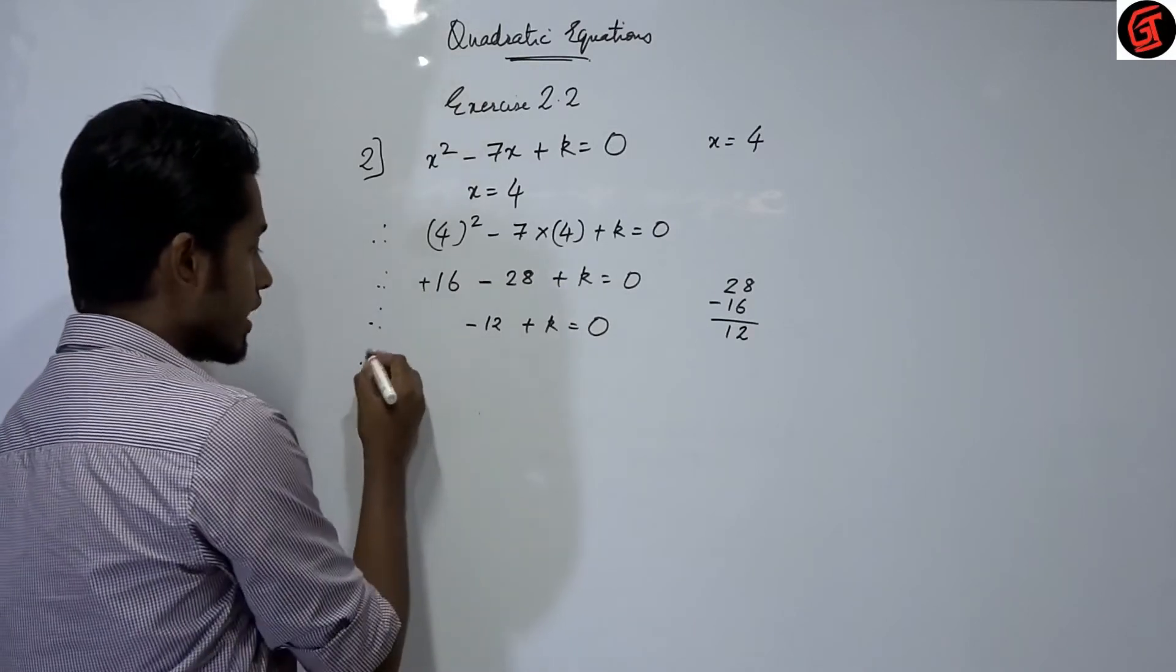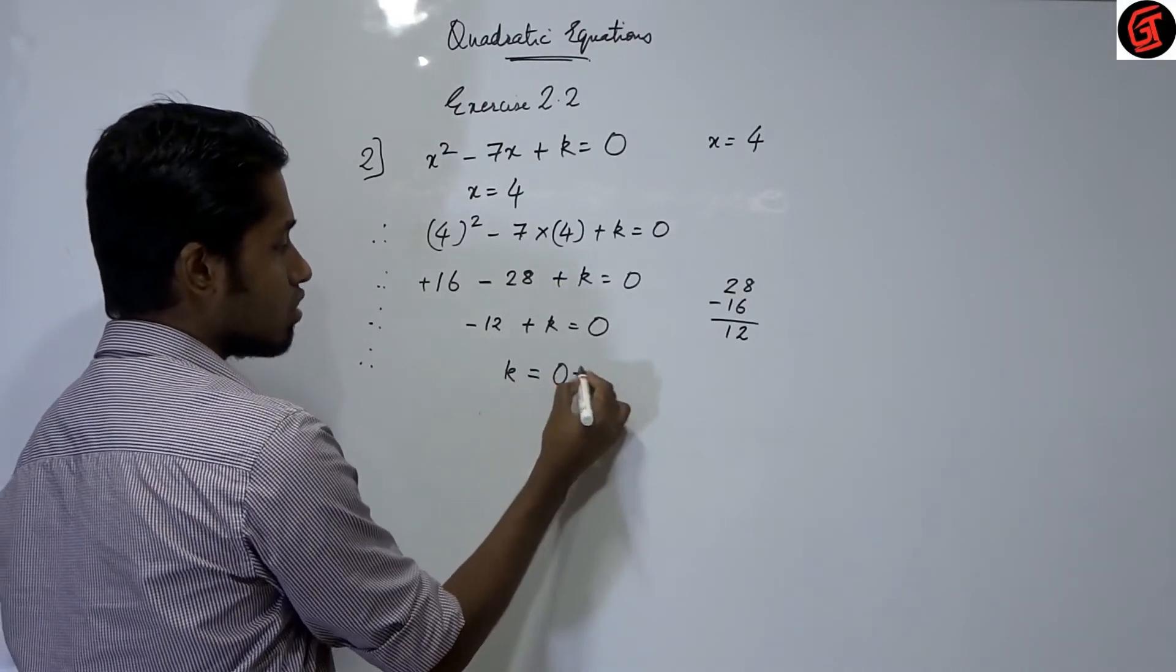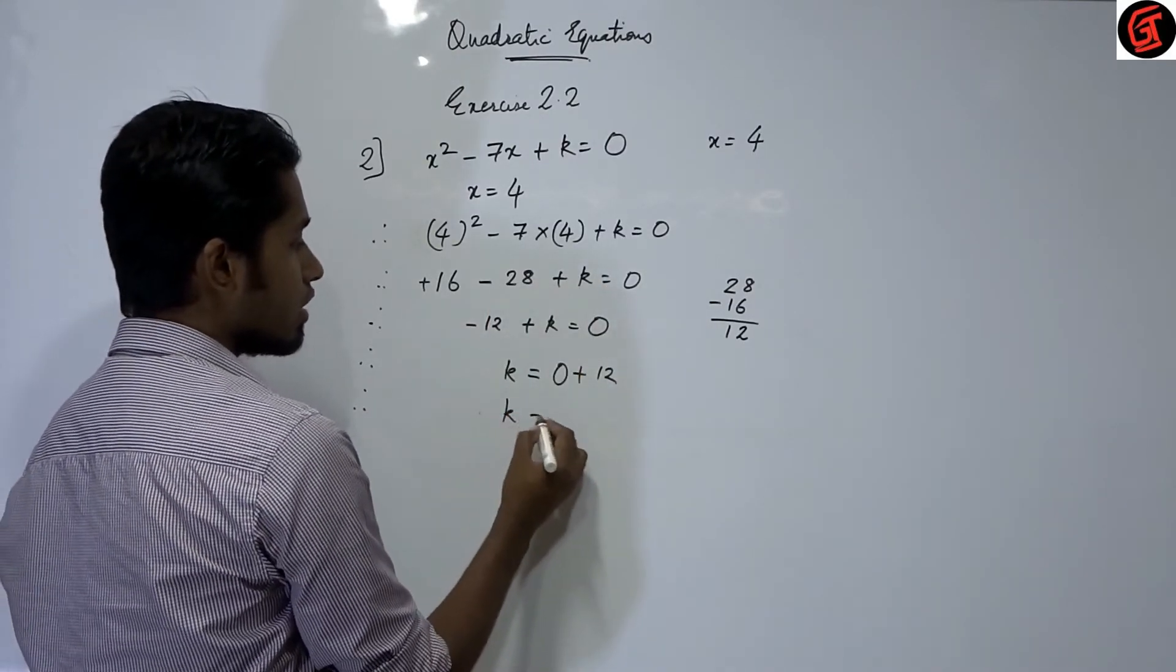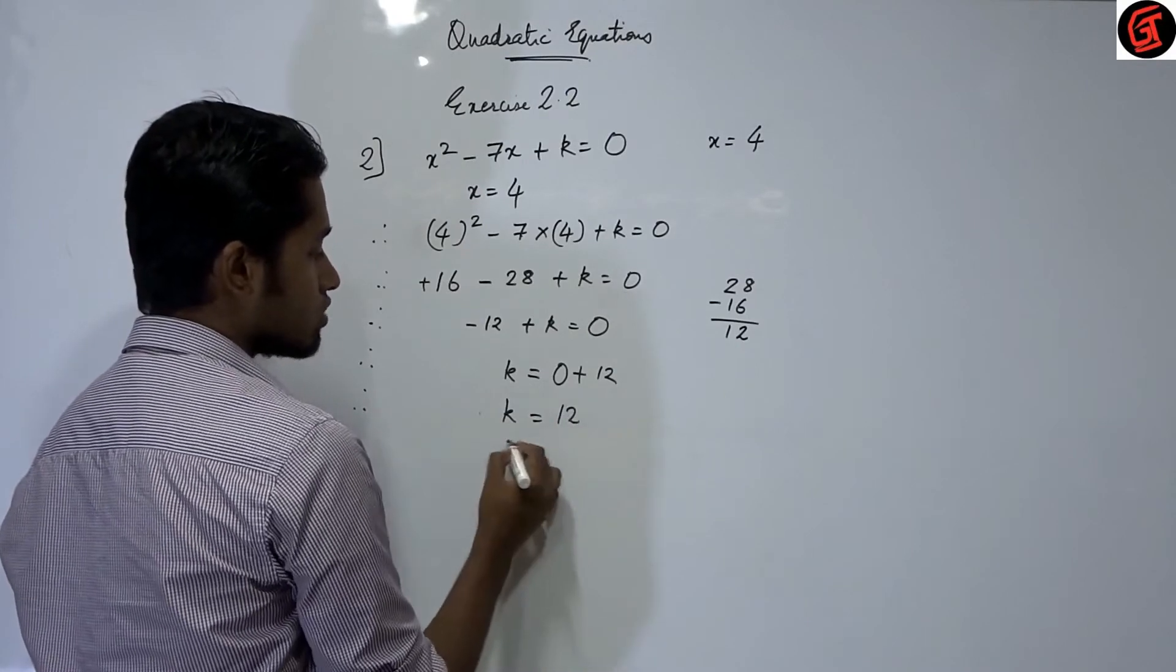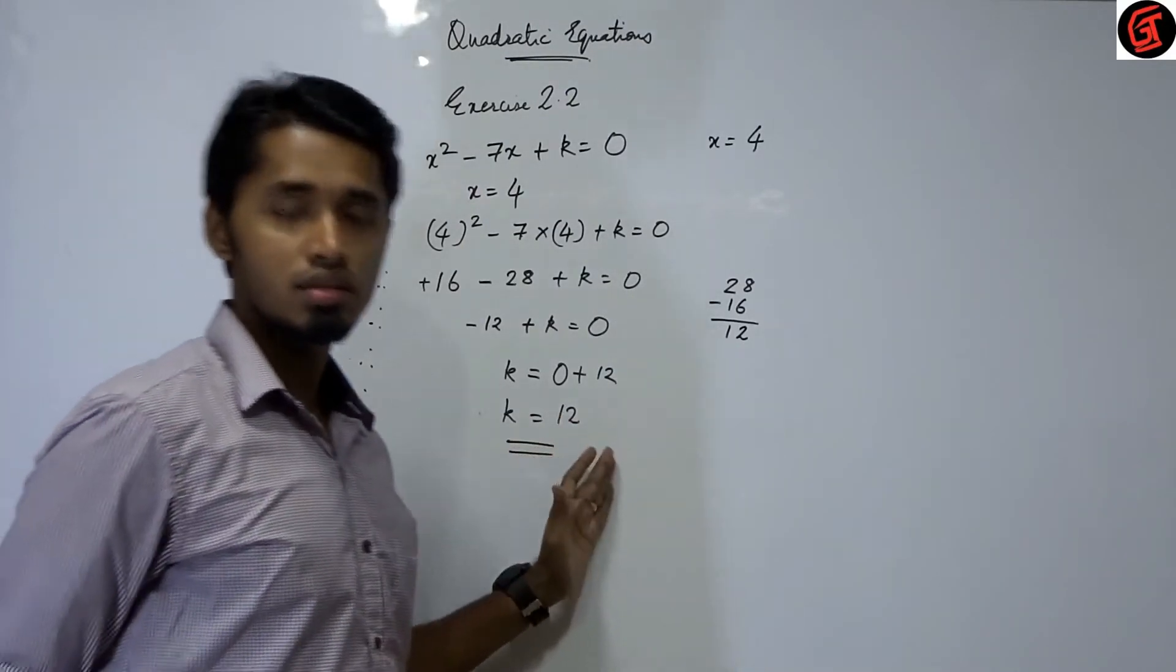Now we have to find the value of k. So let only k be on the left, remaining on the right. 0 plus 12. Why? Plus 12, minus comes here becomes plus. Therefore k is equal to 12. Therefore the value of k is 12. That's it. This ends the sum.